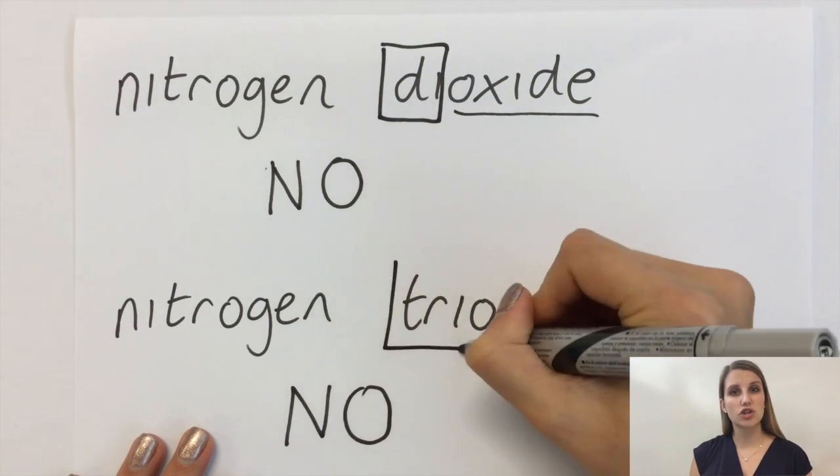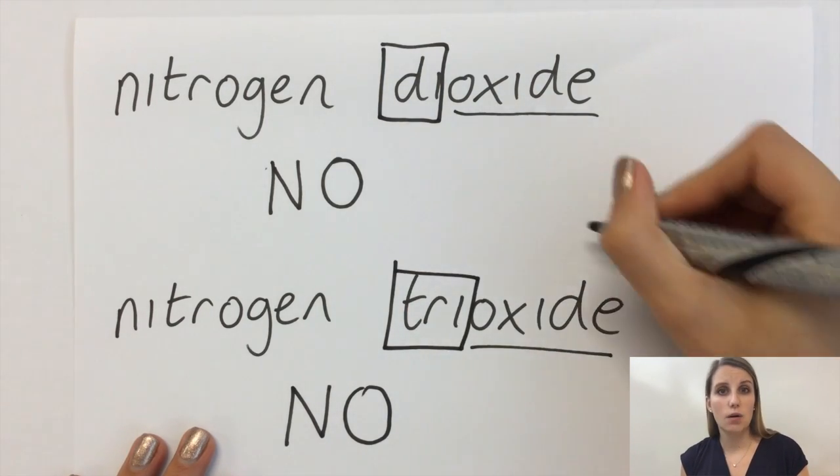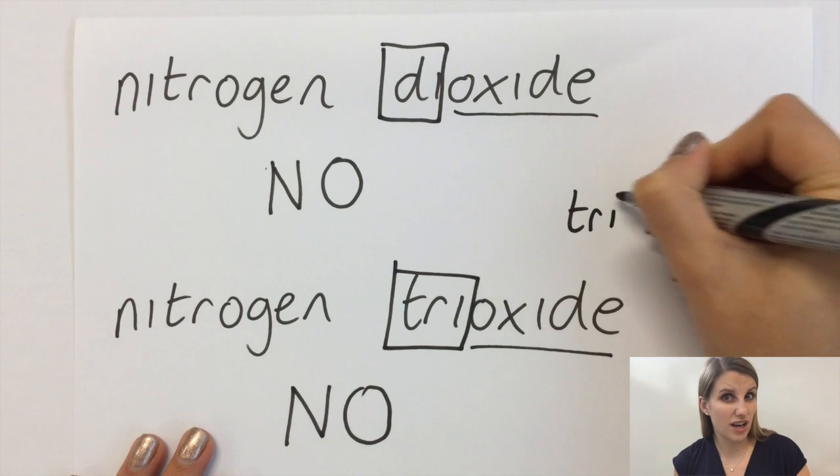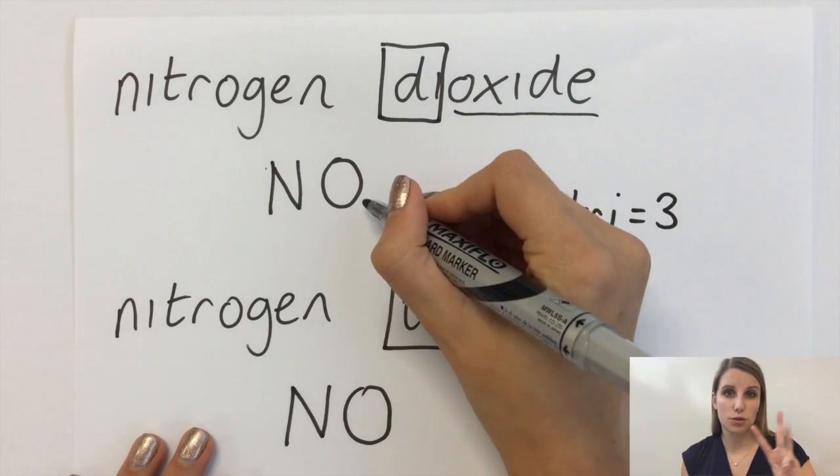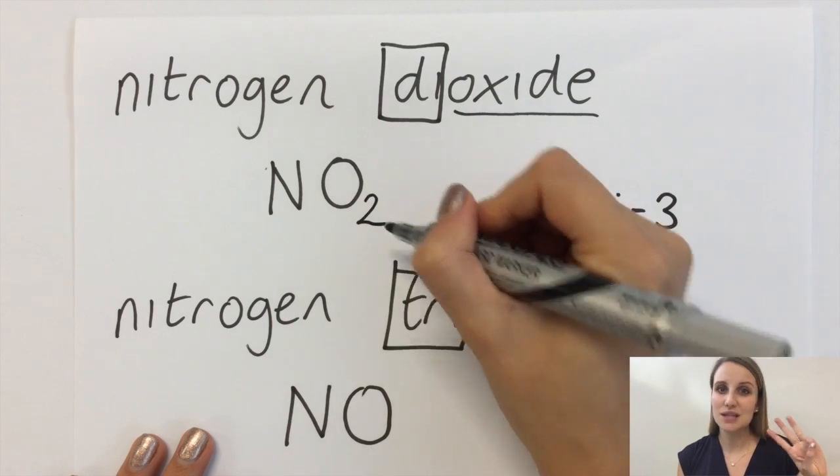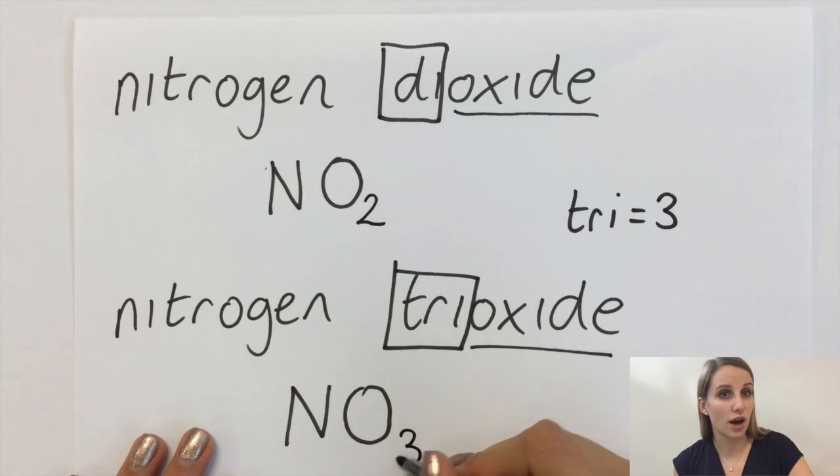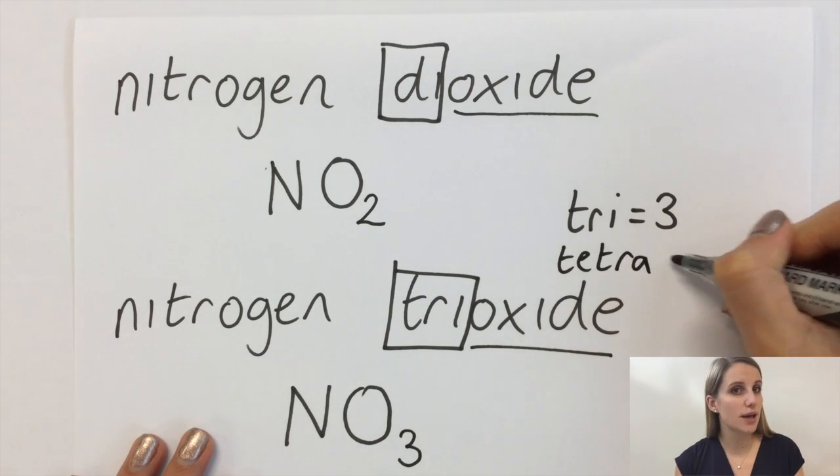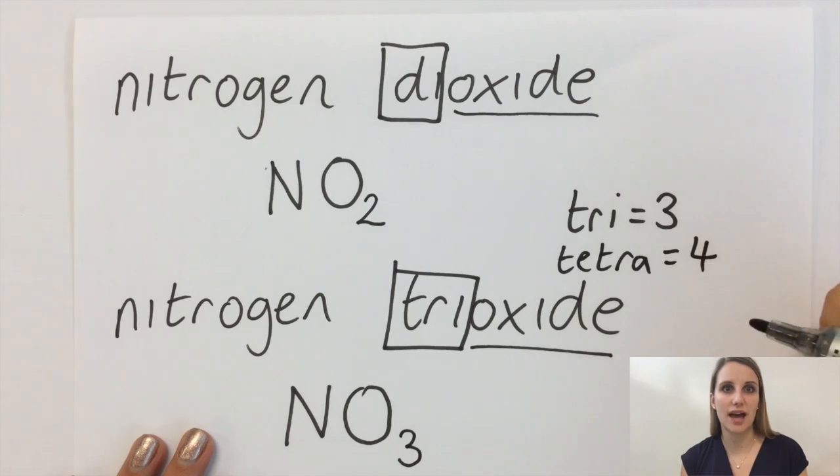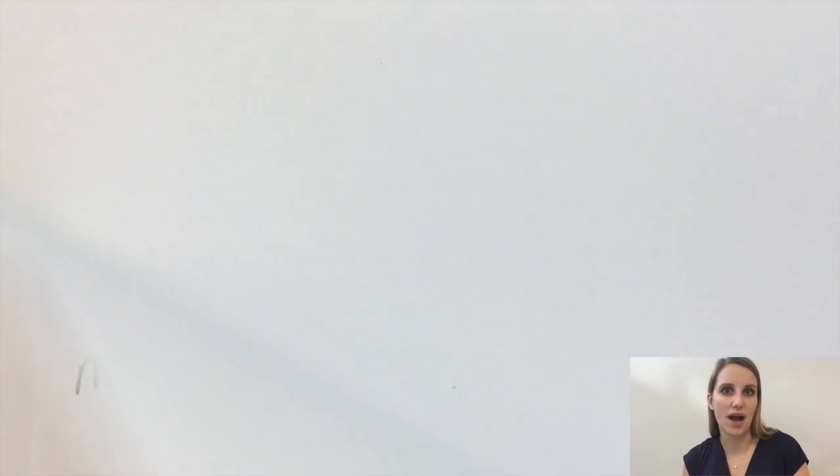The bottom one is nitrogen trioxide. Now, even though I didn't teach you this in the video, you probably should know that the prefix tri means three in total. So this one is NO3, nitrogen trioxide. In case you were wondering, if it's got four things attached to it, that makes it tetra. So you get carbon tetrachloride.